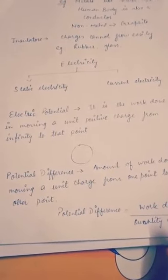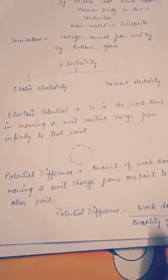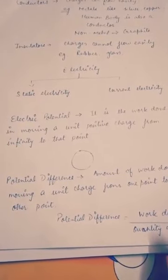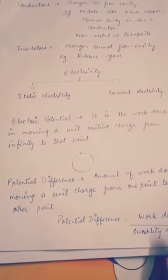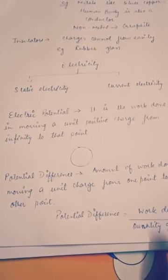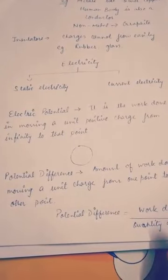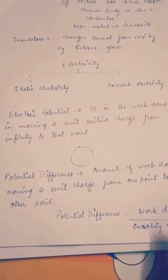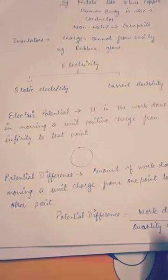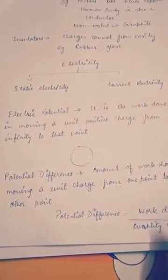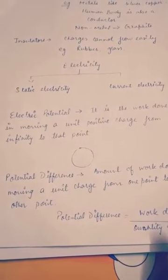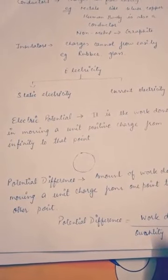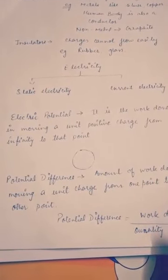Even our human body is also a good conductor of electricity. Now, coming to non-metals — this is an exception. Non-metals are not good conductors. But graphite, a form of carbon, is a good conductor.